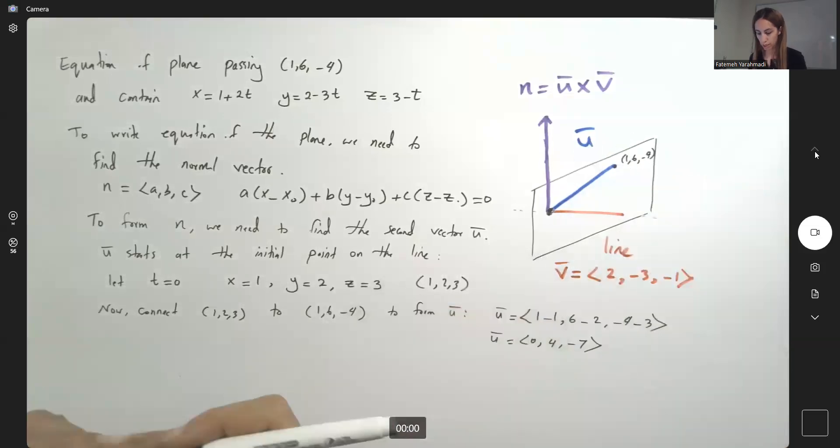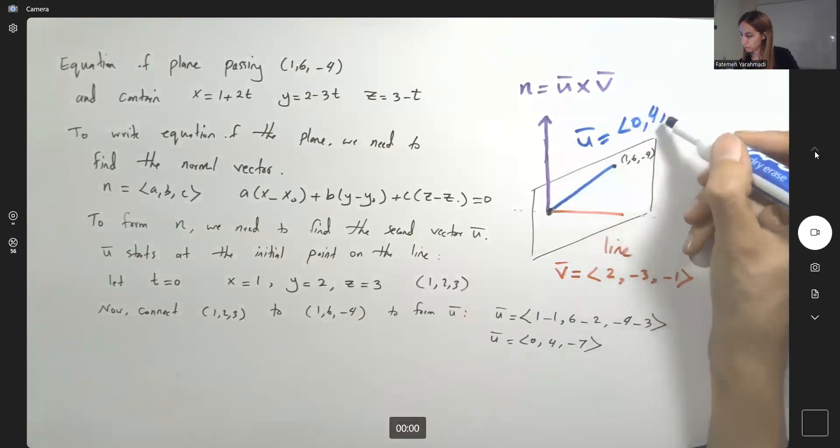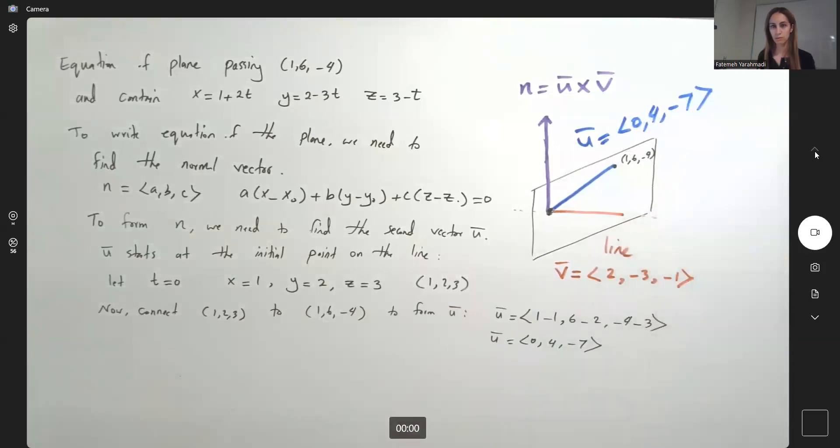I have v, I have u. Now I can easily find the normal vector. 0, 4, negative 7. The normal vector is the cross product between u and v.